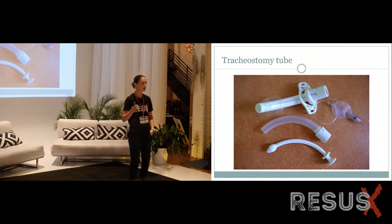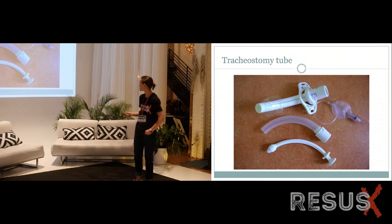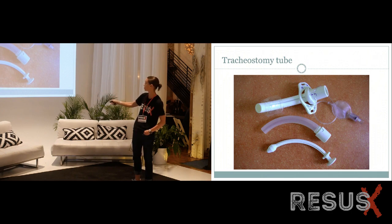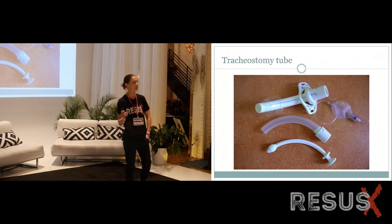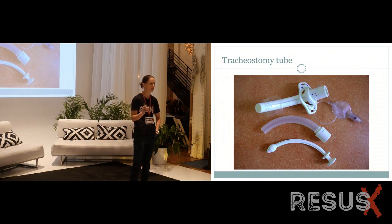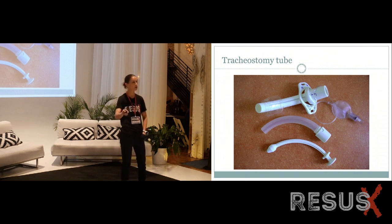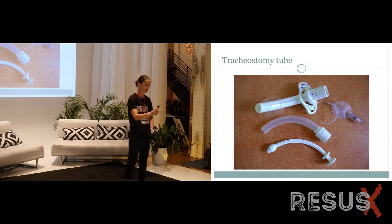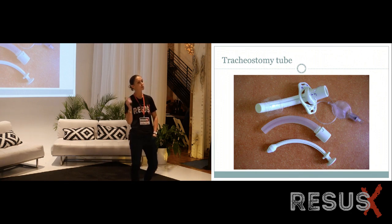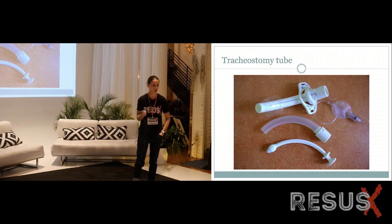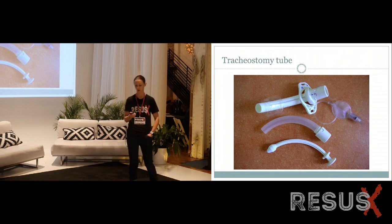When we call it a size 6 Shiley, we're referring to that inner diameter. You can glance at the neck plate and know this is a cuffed tracheostomy tube because there's a pilot balloon — you can actually see the cuff in this picture. One of the first things you should check — it should take one second — is there a pilot balloon? Because we need an inflated cuff to ventilate with positive pressure using either a bag-valve mask or a mechanical ventilator.